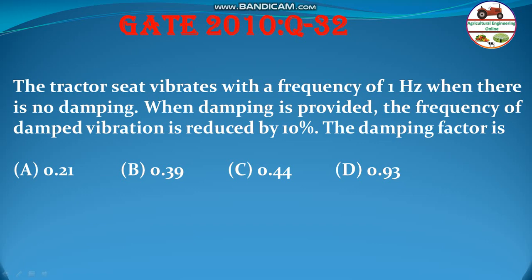The question says: the tractor seat vibrates with a frequency of 1 Hertz when there is no damping. When damping is provided, the frequency of damped vibration is reduced by 10 percent. The damping factor is 0.21, 0.39, 0.44, or 0.93.